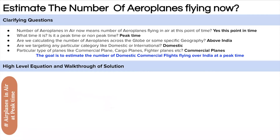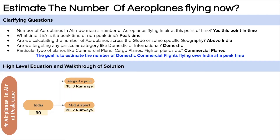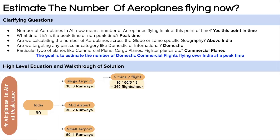Let's walk through the high-level solution. There are around 90 operational airports in India. Of these, let's assume 10 are mega airports with around 3 runways on average, 30 are mid-size airports with around 2 runways, and 50 are mini airports with 1 runway. At mega airports during busy hours, we can assume that on average every 5 minutes a plane takes off or lands — roughly every 5 minutes a flight takes off or lands.